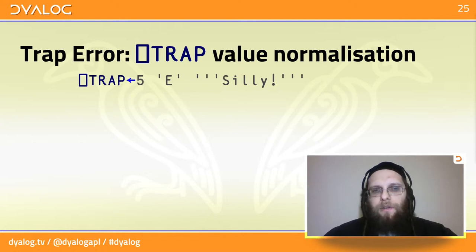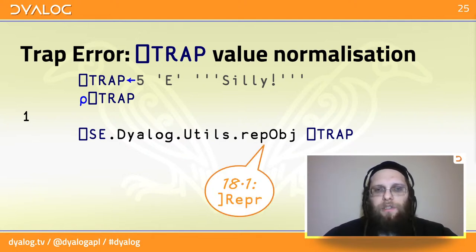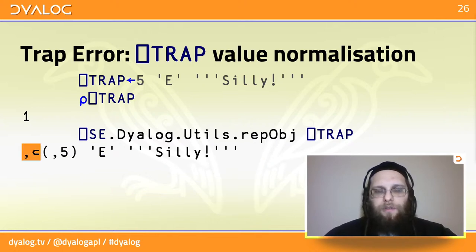When you've set quad trap to this handler, then the value of quad trap is immediately normalized. So it might come as a surprise that if you look at the shape of quad trap after setting it, it has only one element, even though we gave it three. Now, there's this really useful tool called revobj, but it's a little bit hard to find. In fact, it's so useful that in version 18.1 that's due this summer, we're adding a user command to allow you easy access to it. Now, if we run this on quad trap, we can see that the value of quad trap has been normalized. It became a vector of a single handler. And the list of error numbers that this handler is valid for has been normalized. We only really gave it a scalar, but it was normalized to a one element vector.